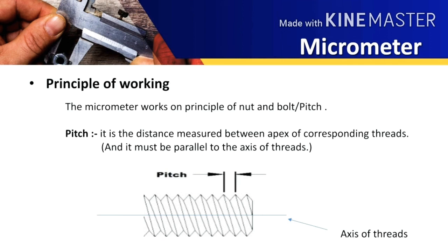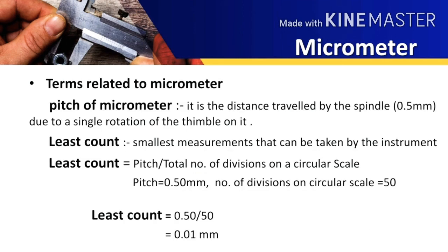It means the smaller the pitch, the smaller will be the displacement of the nut on the bolt. So let us see the pitch of micrometer. The pitch of micrometer is defined as the distance traveled by the spindle due to the single rotation of the thimble on it, and in the case of micrometer, the spindle moves 0.5 mm due to a single rotation of the spindle.